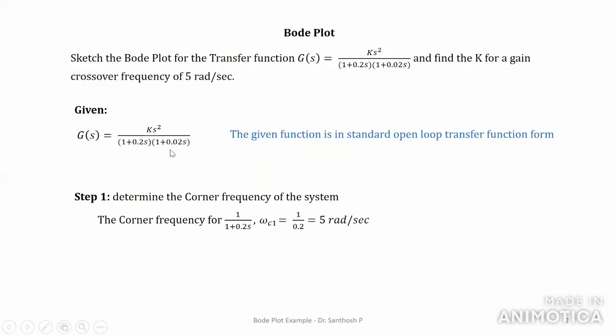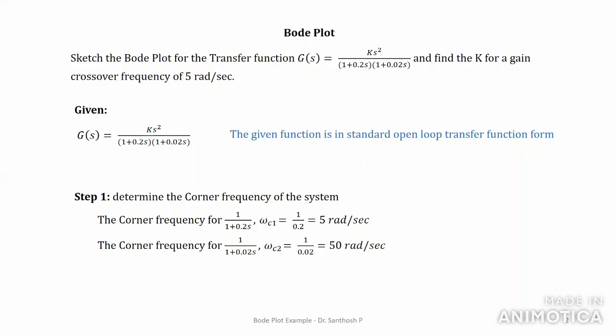We have two terms: (1 + 0.2s) and (1 + 0.02s), and we need to find the corner frequencies for both. The first corner frequency is ωc1 = 1/0.2 = 5 radians per second. Similarly, for (1 + 0.02s), the corner frequency is 1/0.02 = 50 radians per second.